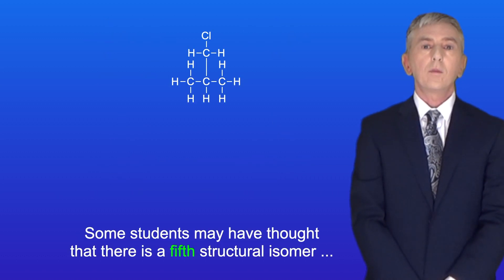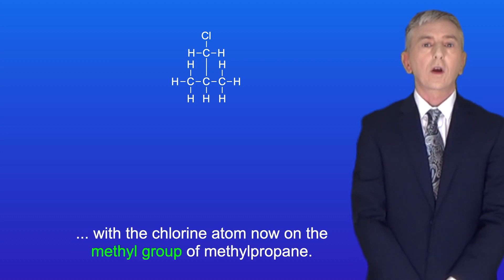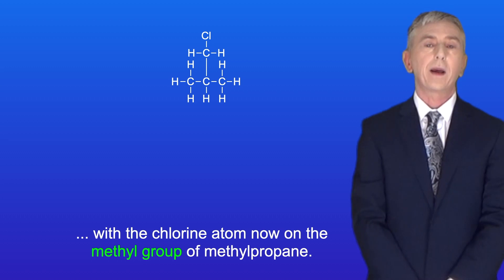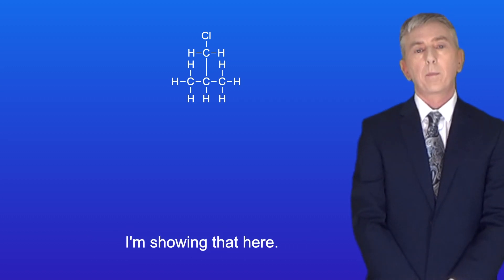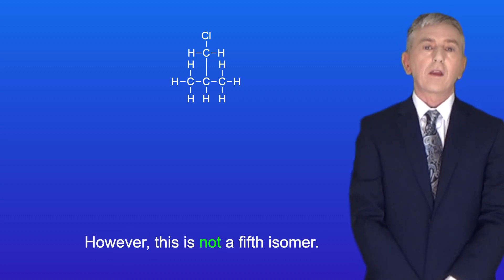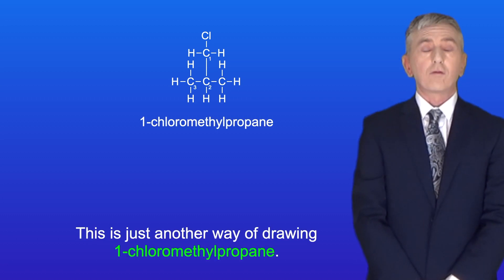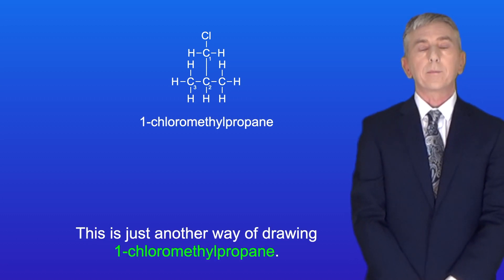Some students may have thought there is a fifth structural isomer with a chlorine atom on the methyl group of methylpropane. However this is not a fifth isomer — it is just another way of drawing 1-chloromethylpropane.